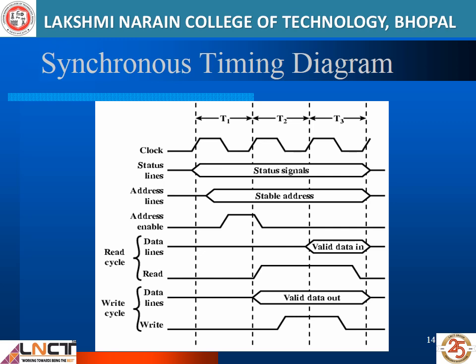In the 8085, the lower-order address bus is also used as a data bus. When the Address Latch Enable (ALE) signal is high, the lower-order bus is considered the address bus, so the full address is available. In the read cycle, during T-state T2 the ALE signal goes low, meaning the lower-order bus becomes a data bus. After the end of T2, the data is available on the data bus.